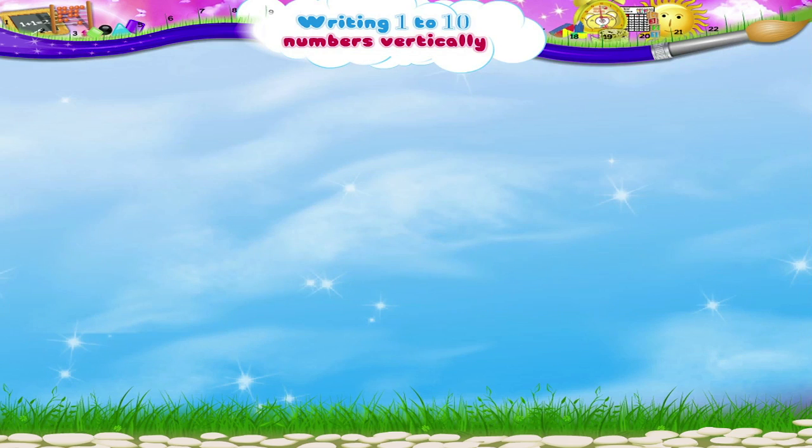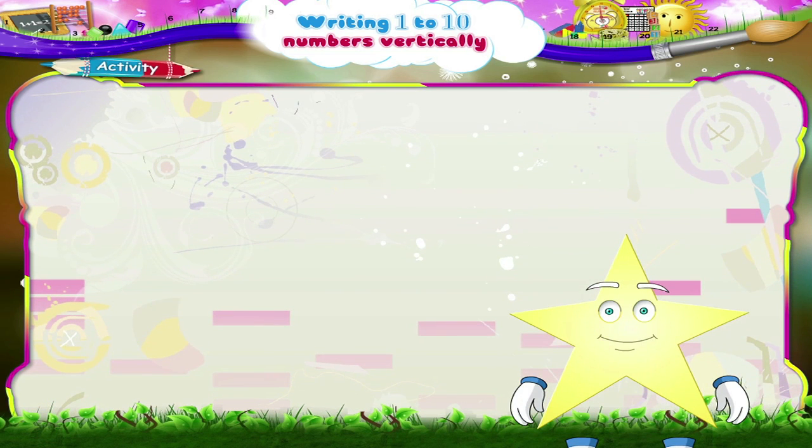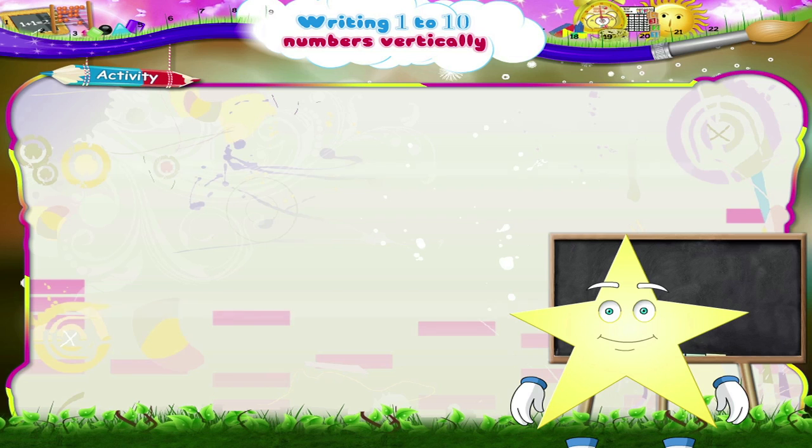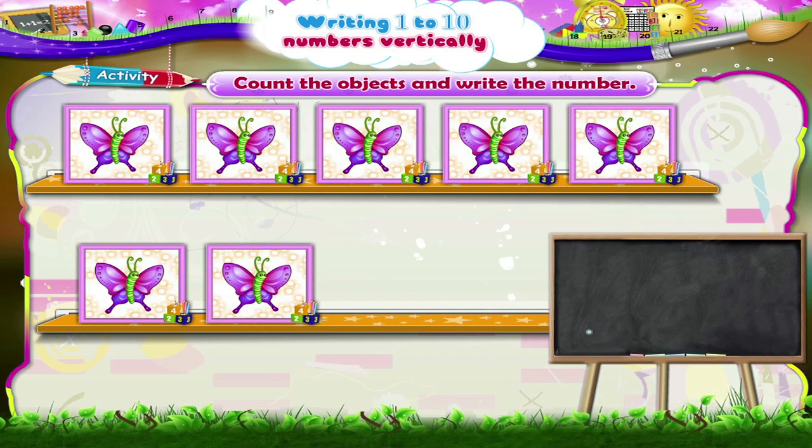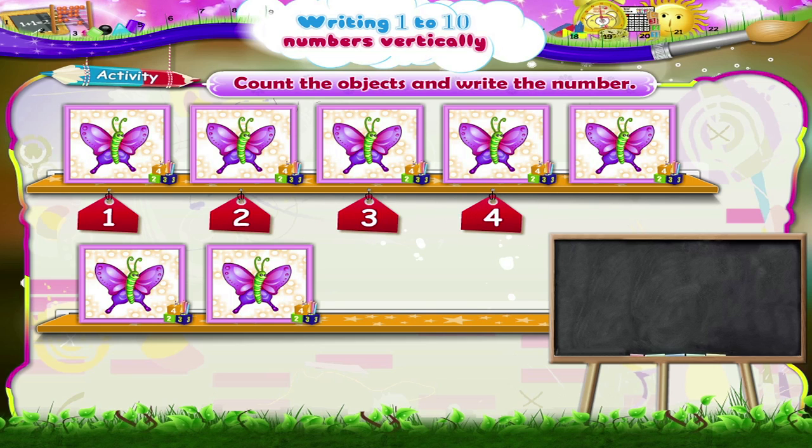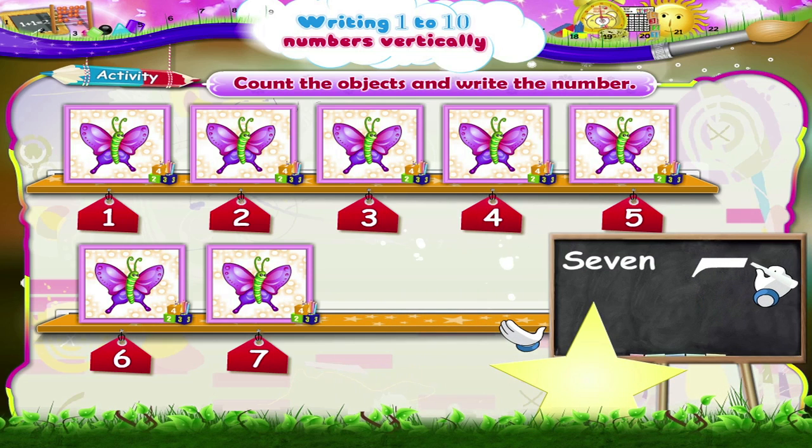We will now do an activity together. Look at the picture, count the objects and write the number. Let's begin with the butterflies. 1, 2, 3, 4, 5, 6, 7 butterflies. S-E-V-E-N 7. Now write the number 7.